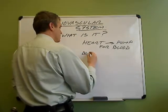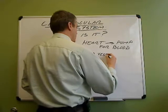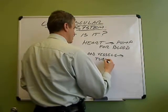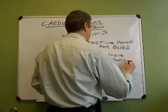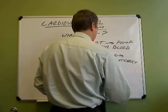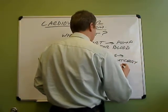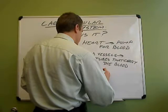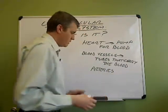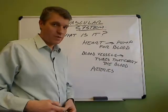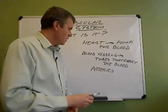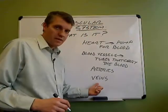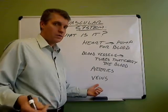And then we have the blood vessels, which are basically tubes that carry the blood. The two major types of blood vessels are arteries — a blood vessel that carries blood away from the heart — and veins, which carry blood to the heart.